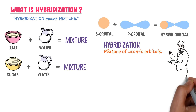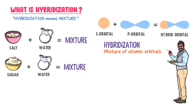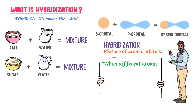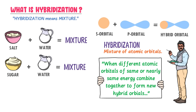In this lecture, for simplicity, I would often use 'mixture of atomic orbitals,' which means hybridization of atomic orbitals, so that you could easily understand it. We define hybridization as when different atomic orbitals of same or nearly same energy combine together to form new hybrid orbitals.